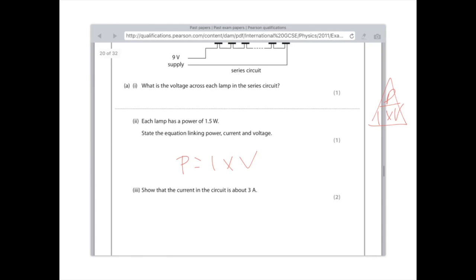We need to use this variation of the formula, which is current equals power divided by voltage (I = P/V). We've been told that the power is 1.5 watts, however there are 20 lamps, so you need to times that by 20 and then divide it by the total voltage which was 9, and it will give you an answer which is 3.3 recurring amps, which is obviously approximately 3 amps.